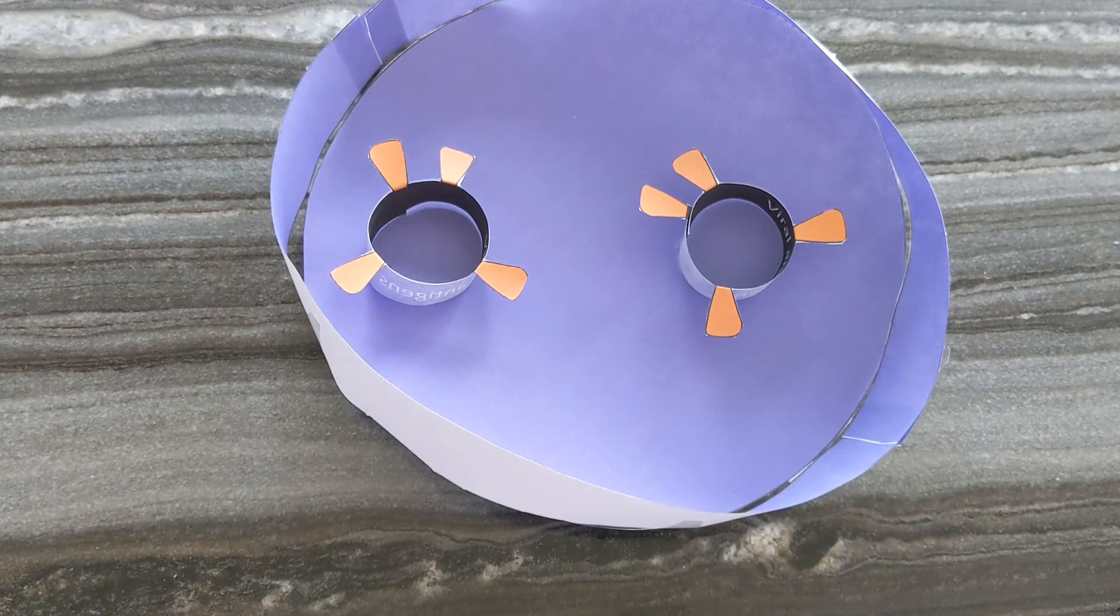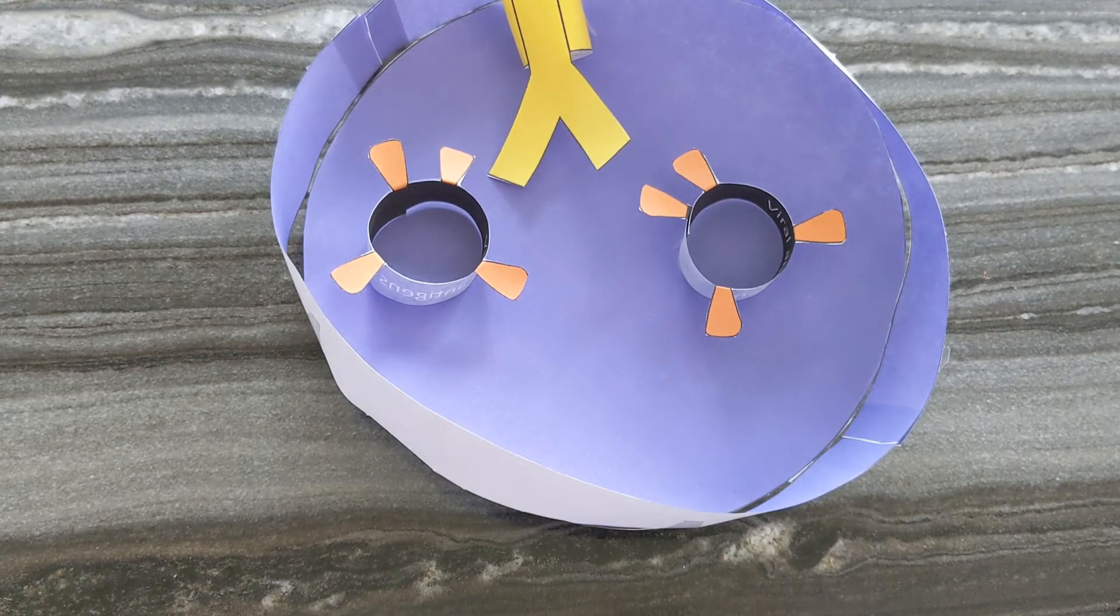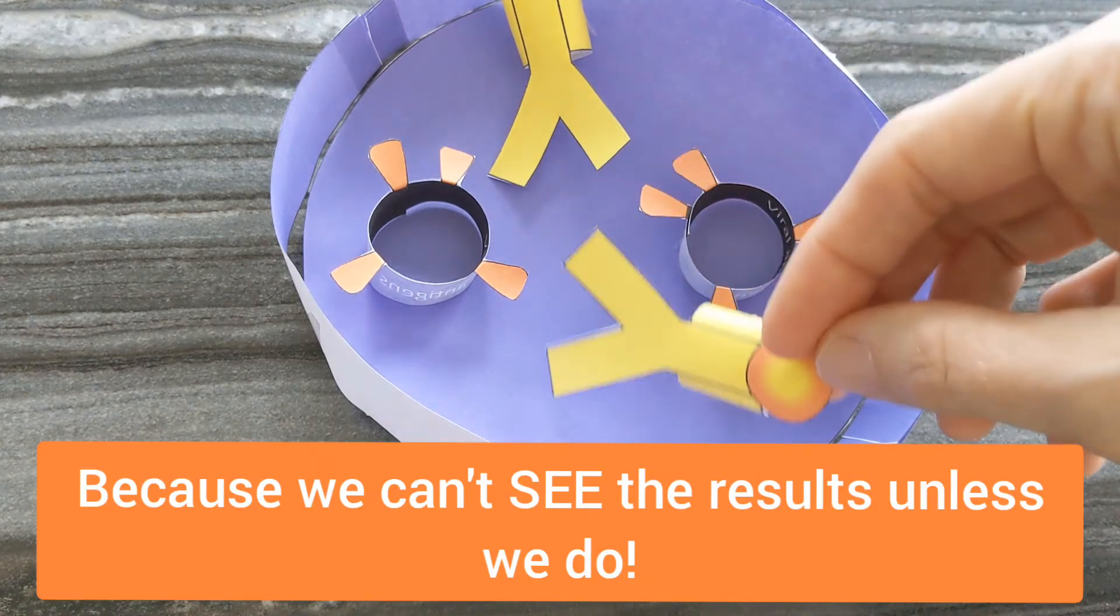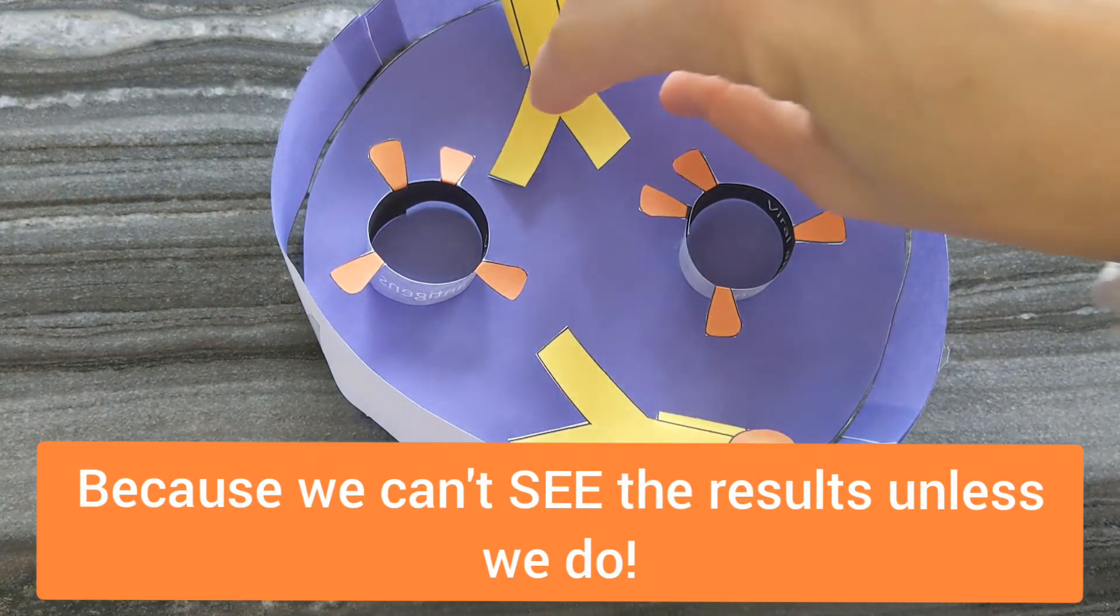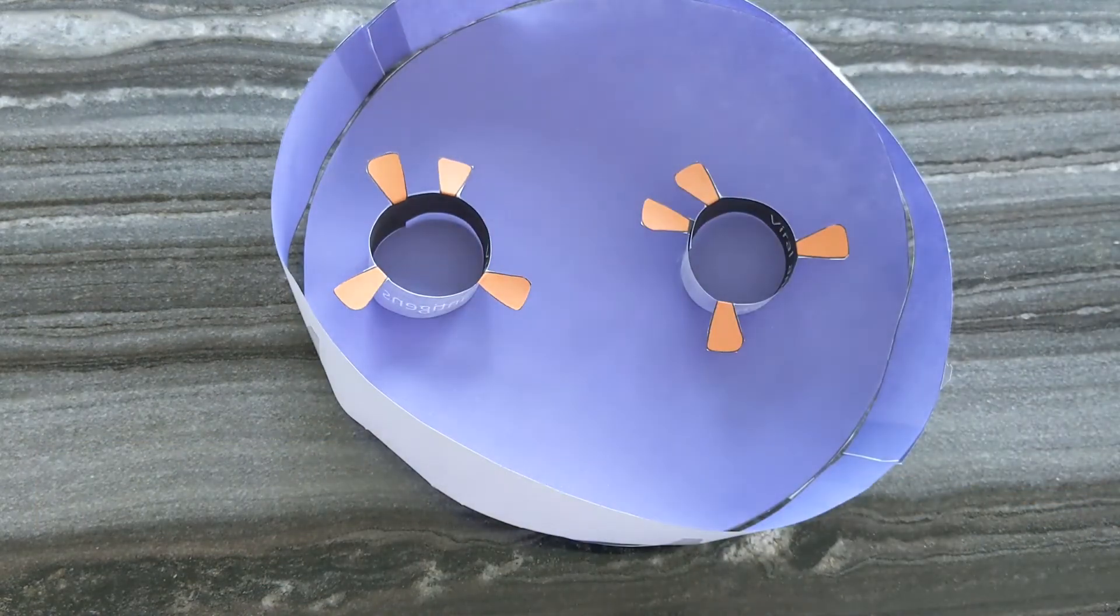You still go ahead and add the enzyme-linked secondary antibodies. But when you do it, they don't have anything to stick to. During your wash cycle, those are going to wash away.